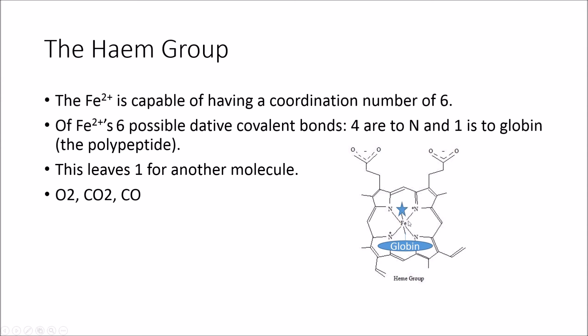And one is to globin, which is that polypeptide we talked about earlier. So this leaves one, which I've shown through a star here, that's actually able to bond to things like O2, CO2 and carbon monoxide, which we will look at in a lot more detail now. Obviously O2 is needed to supply those cells with the oxygen they need to be able to respire effectively. The CO2 is needed to bind on there because that's the waste product produced by the cells and needs to be removed. And CO we'll look at in a lot more detail now.